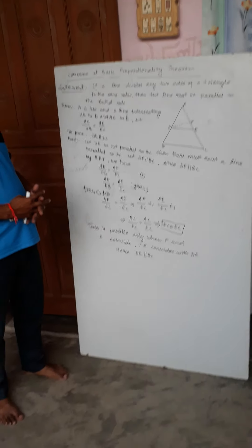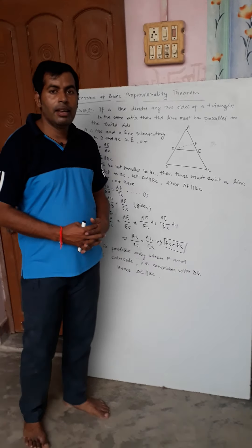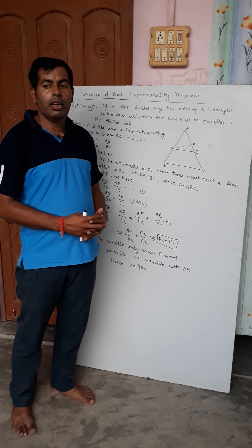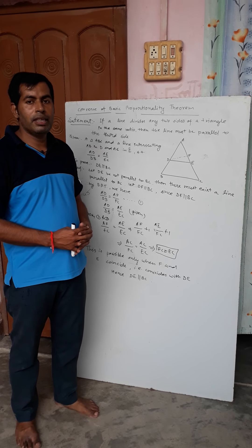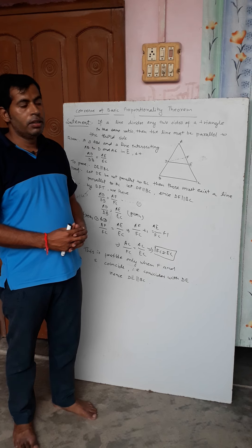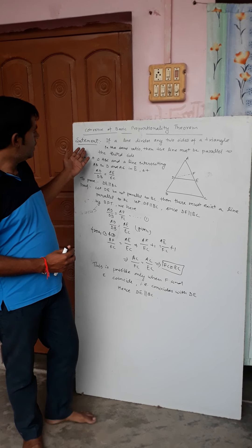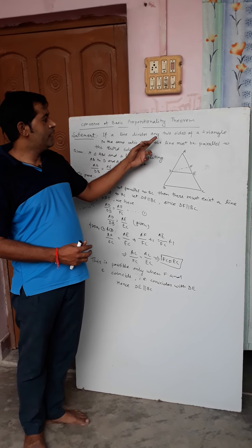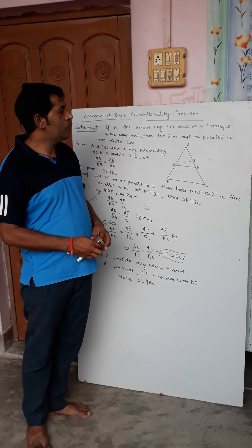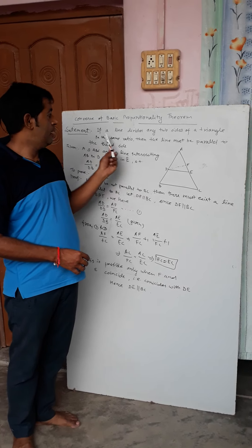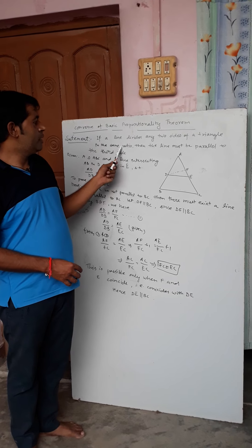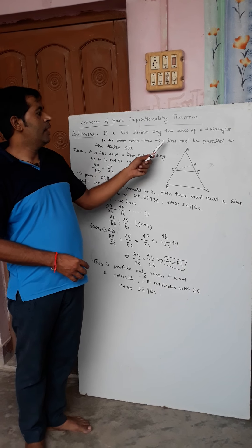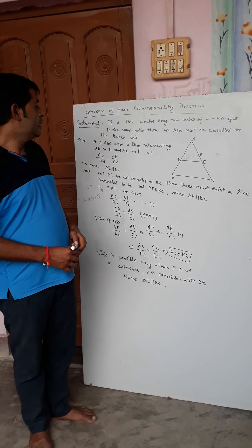Hello students, we are going to learn the Converse of the Basic Proportionality Theorem. Let us see the statement: if a line divides any two sides of a triangle in the same ratio, then the line must be parallel to the third side.